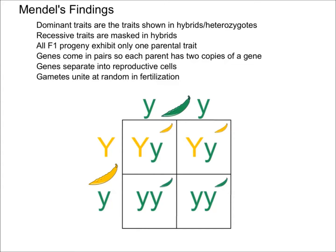What Mendel found out was that dominant traits are the traits shown in hybrids or heterozygotes. As you can see, this box here is a heterozygote, and it's a yellow color — so yellow in this case is going to be the dominant trait.